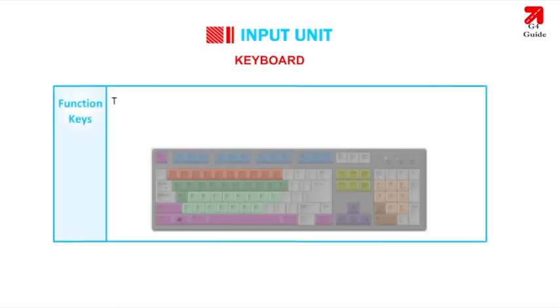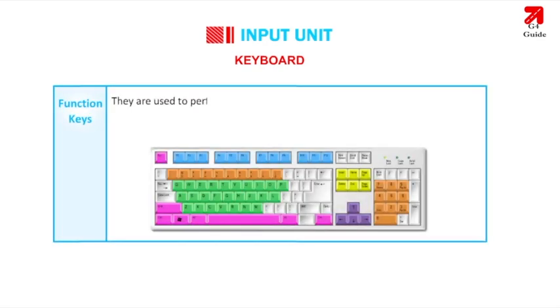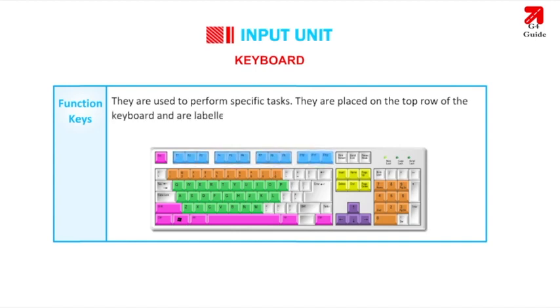Function Keys: They are used to perform specific tasks. They are placed on the top row of the keyboard and are labeled F1 through F12. These keys have different functions in different programs.